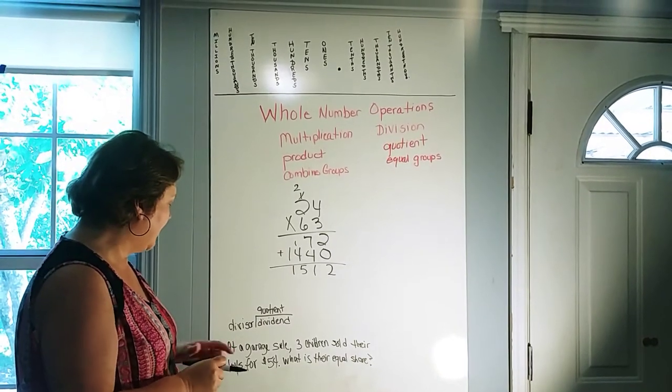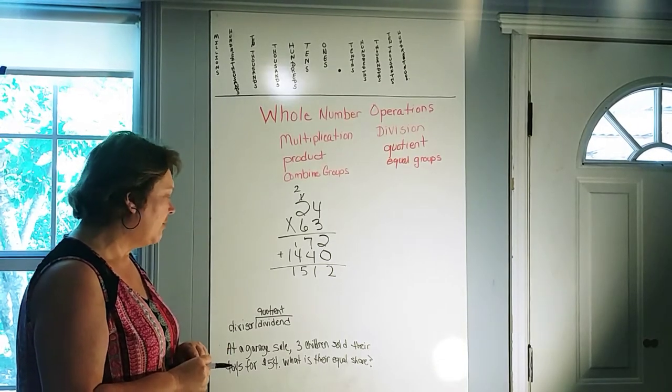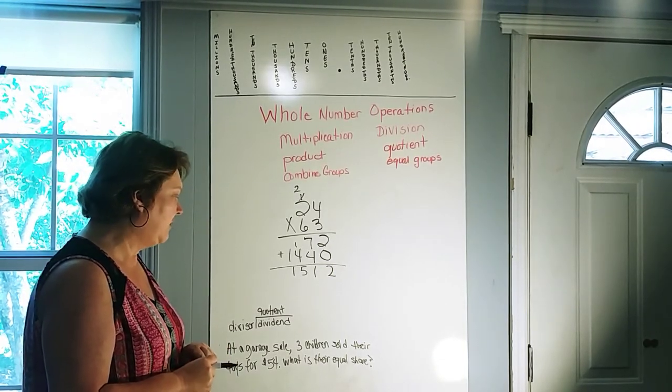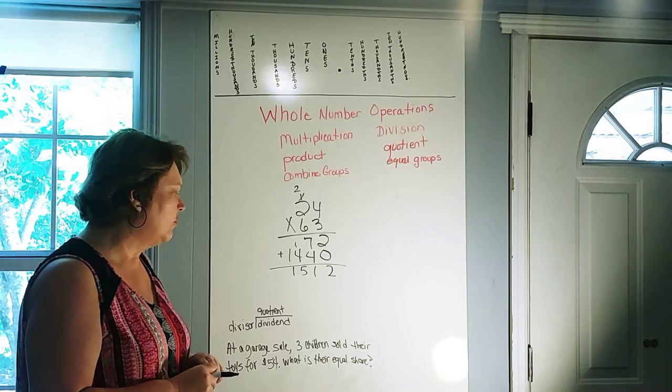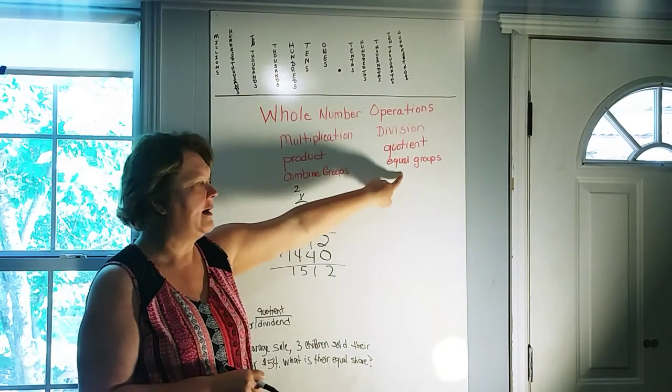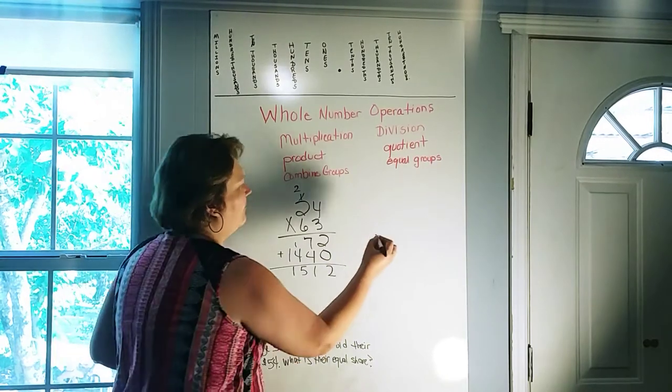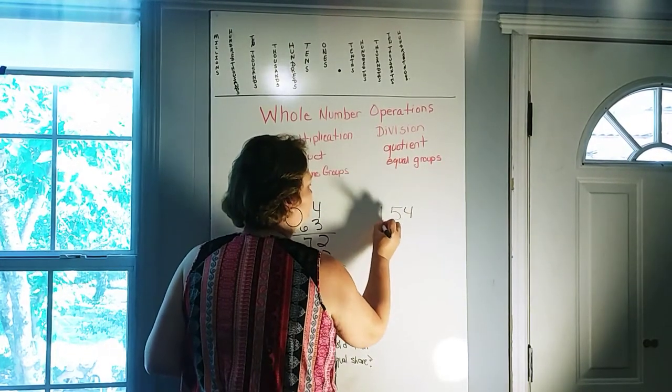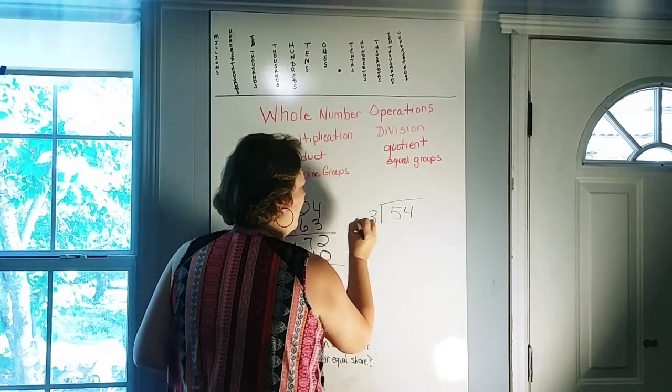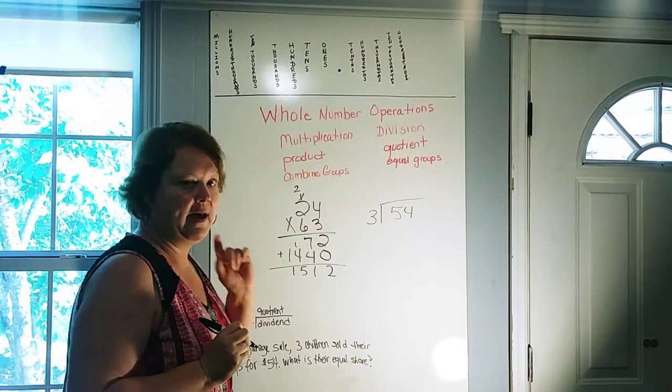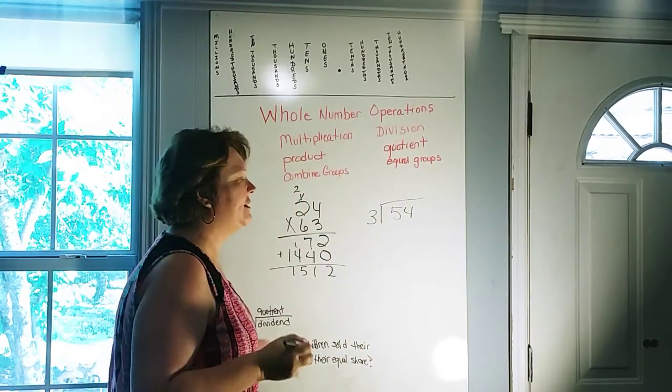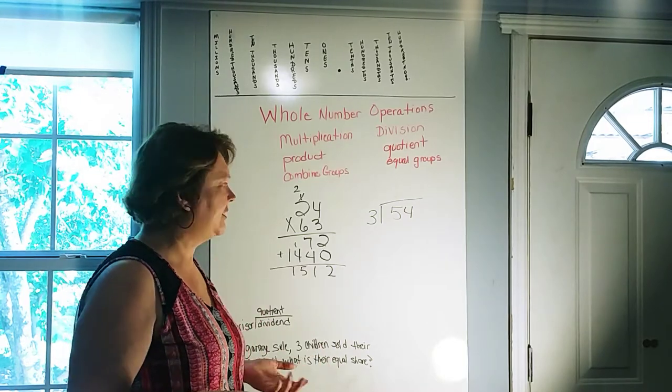And the word problem that it gives us is: at a garage sale, three children sold their toys for $54. What is their equal share? We're using equal groups here, so that tells us we're dividing. So we'll take the $54 that they earned at the yard sale. We'll divide that by the three children that put toys in the yard sale, and we'll see how much each child earned.